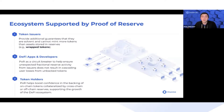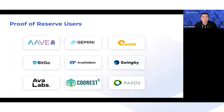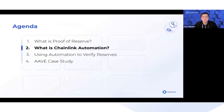The last beneficiary category is token holders — people who actually hold these assets and want to know that what they hold is fully backed at all times. We're working with a number of great projects on this, including Aave, Gemini, TrustToken, and others. I'll pass it over to Sam to talk about what Chainlink Automation is.